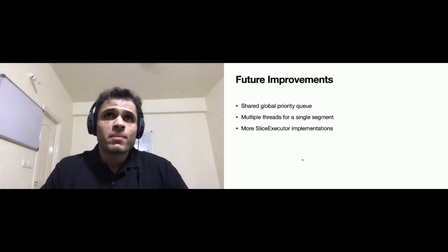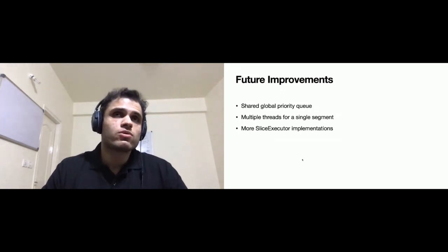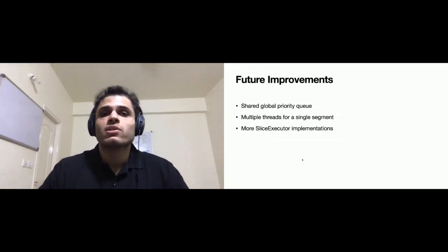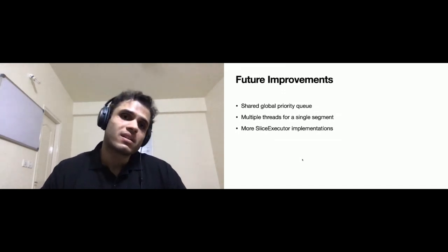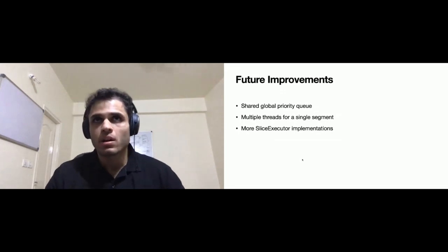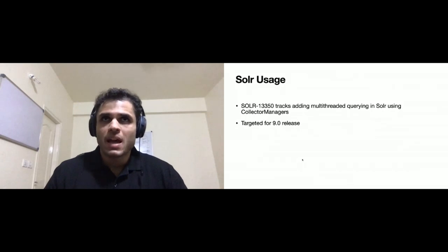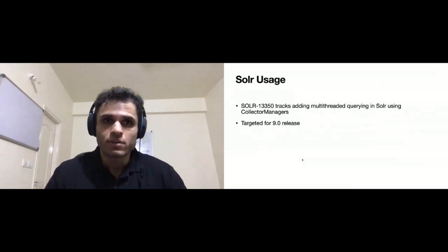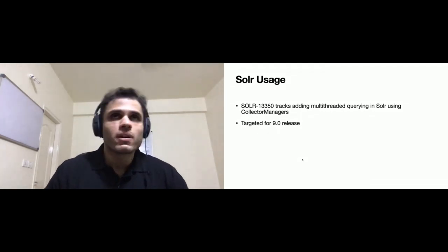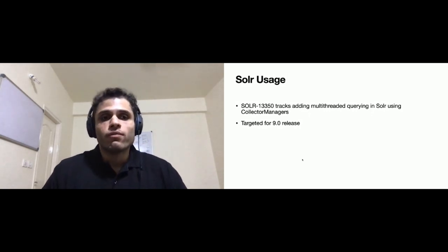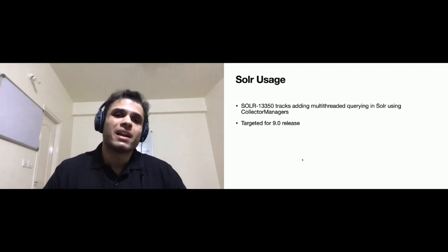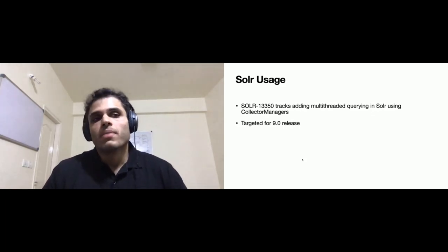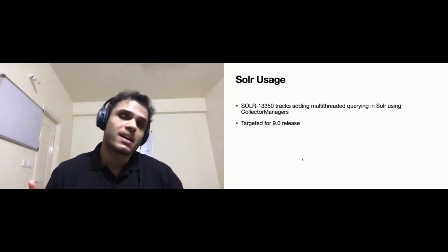There are also improvements needed around the SliceExecutor model, which is fairly simplistic right now. We want to use more system stats, resource stats, and live monitoring to control how threads are being executed for queries that are using concurrency. Currently, neither of the popular search engines built on top of Lucene actually exposes this feature. Solr has an open item for this, targeted for the 9.0 release — there's a Jira and a PR open. Hopefully the Solr 9.0 release will have usage of CollectorManager and allow multi-threaded searching on a single node, which should help for large analytical queries.